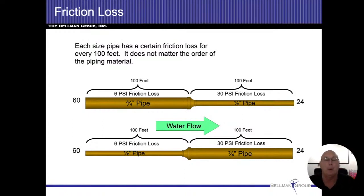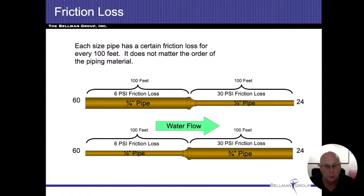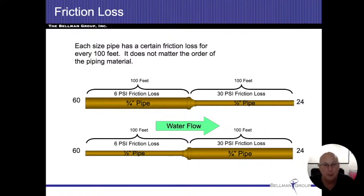Residual pressure is the amount of pressure that's left in the water system after the water is flowing. What this slide shows is on the left-hand side we have 60 PSI coming into the water system, and where it's discharging with the water flowing, we're left with 24 PSI — that's 36 PSI friction loss. The slide is showing it doesn't matter the order of flow: big pipe, little pipe, little pipe, big pipe — it all totals out and equals out at the final run. Remember: residual pressure is the amount of pressure left with the water flowing; static pressure is the amount of pressure present without the water flowing.